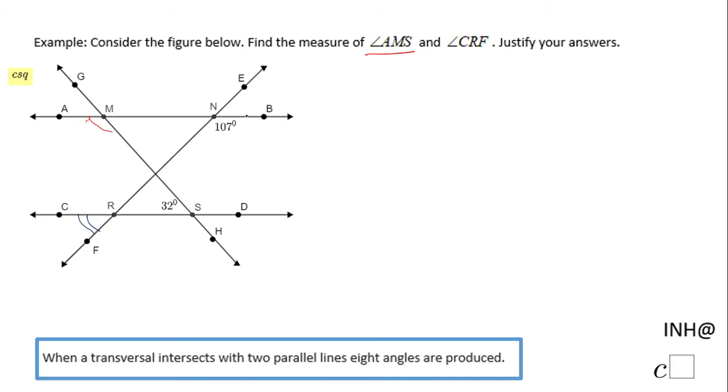First of all, these two lines are parallel lines AB and CD, that should be given. The question is how am I going to find that? When a transversal intersects two parallel lines, eight angles are produced and these angles have some properties.